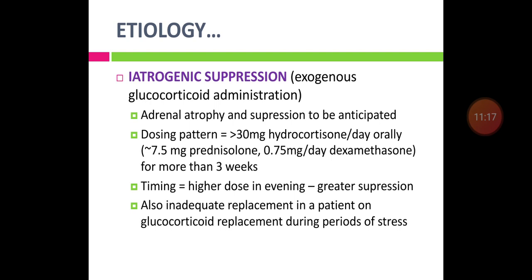Exogenous glucocorticoid administration leads to suppression and atrophy of the adrenal gland depending on dosing and timing. A dose of more than 30 mg of hydrocortisone orally — equivalent to approximately 7.5 mg prednisolone or 0.75 mg dexamethasone per day for more than 3 weeks — results in HPA axis failure. Higher doses in the evening cause greater HPA suppression; inadequate replacement during periods of stress also results in HPA axis failure.